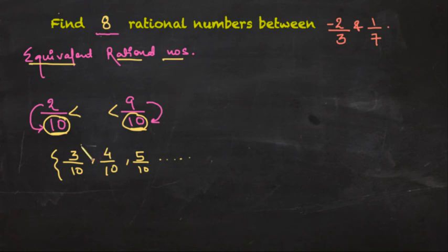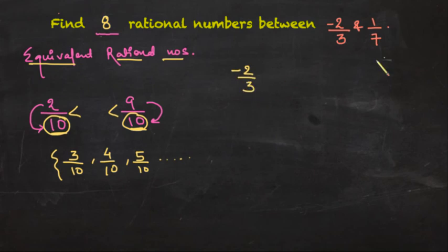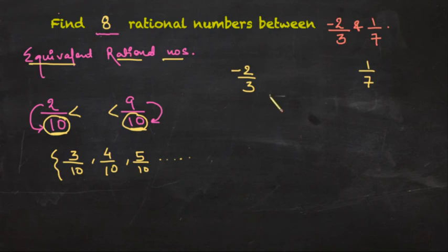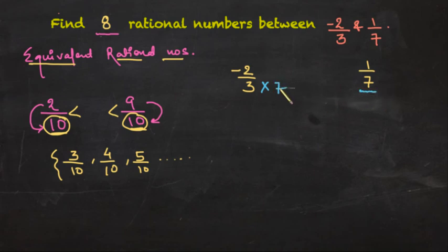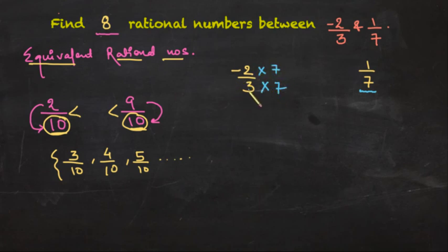The idea here is to get the same denominator so that we can easily identify what we are talking about. We have negative 2 upon 3 and 1 upon 7. If we multiply 3 and 7 we get 21, which is also their LCM. The simplest way is to multiply negative 2 by 3 with the denominator available here, which is 7. So I will multiply 7 in both the numerator and denominator — negative 2 times 7 and 3 times 7 — the value won't change because we are talking about equivalent rational numbers.